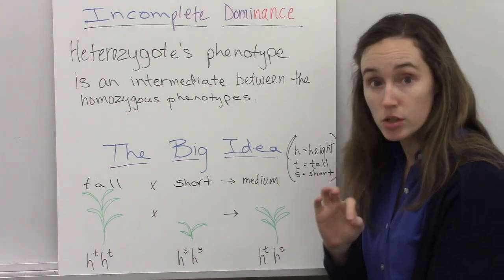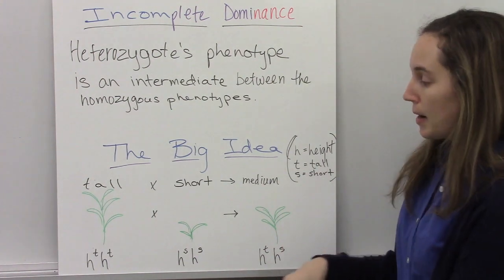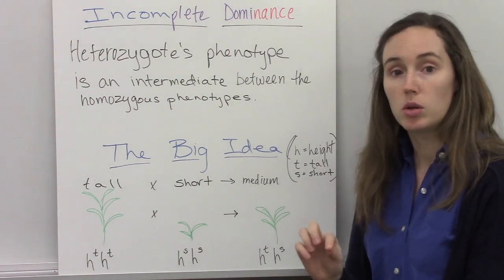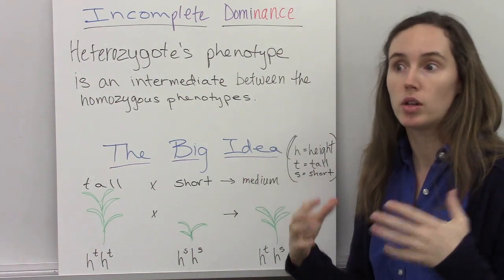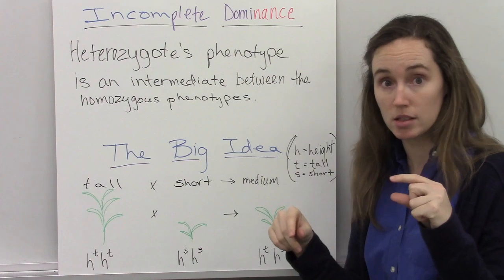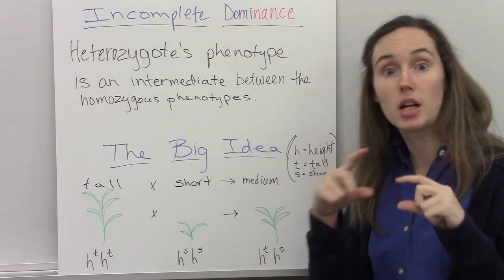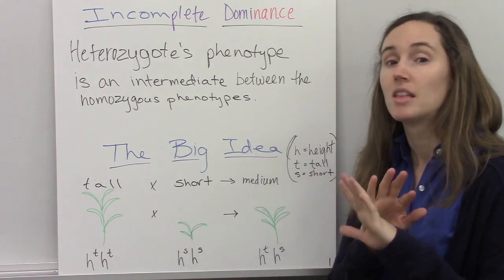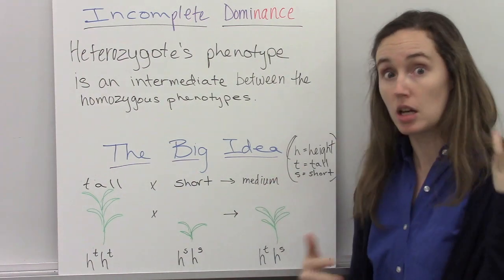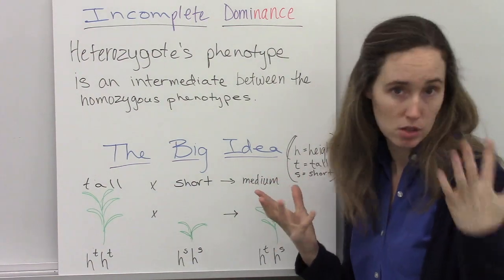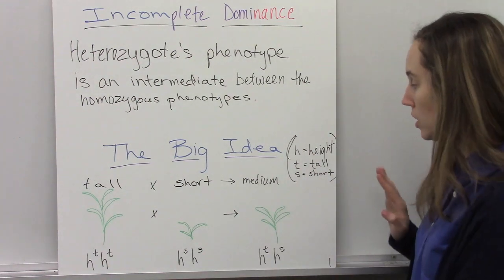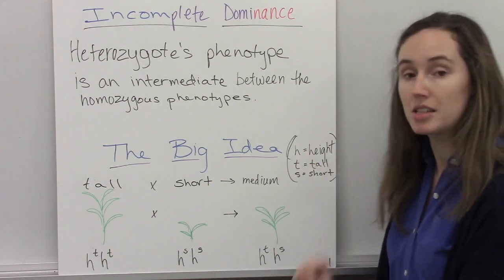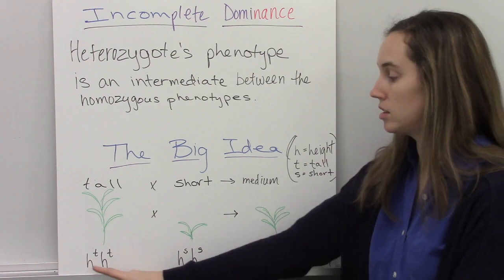Quick note on notation that you'll see: because there's no dominant and recessive, that typical capital letter lowercase letter to show the different alleles of a gene doesn't really apply here, because neither one is really dominant over the other one. So in my example here, the letter H stands for the gene for height.